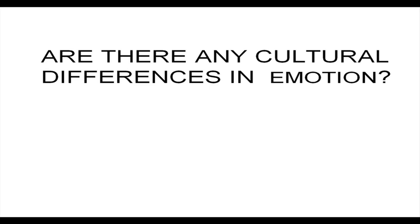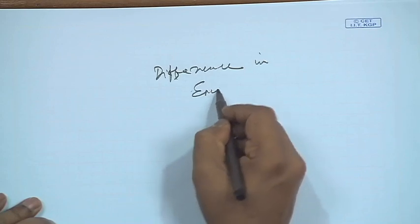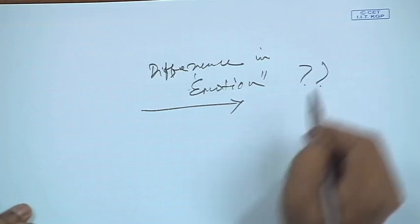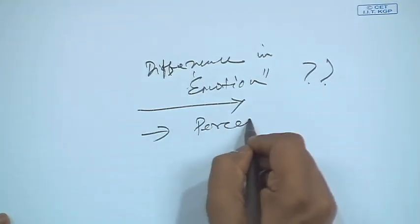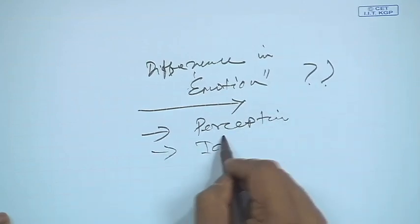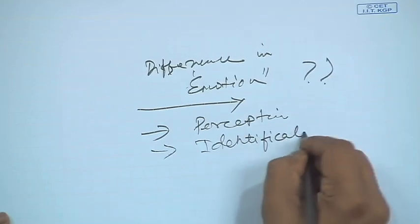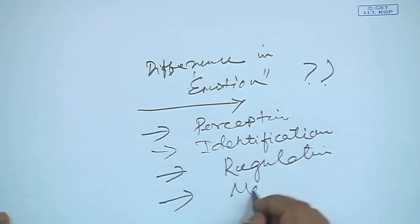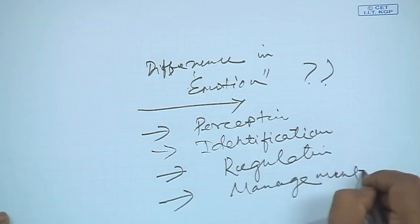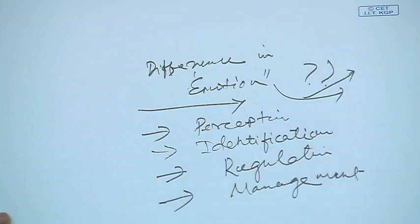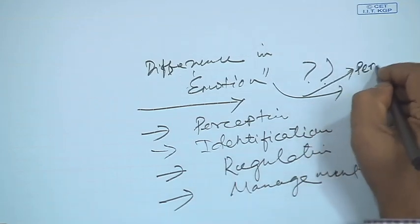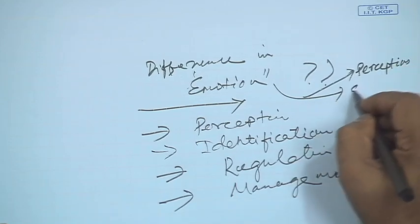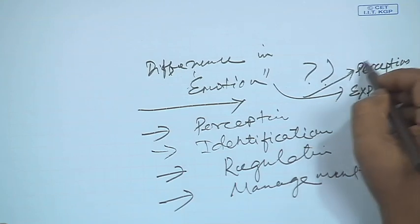So let us begin with: are there any cultural differences in emotions? When we say differences in emotions, we talk about perception, identification, regulation, and management. In simple terms, there are two important things we are trying to analyze: one is perception, and another is expression — or rather, experience.